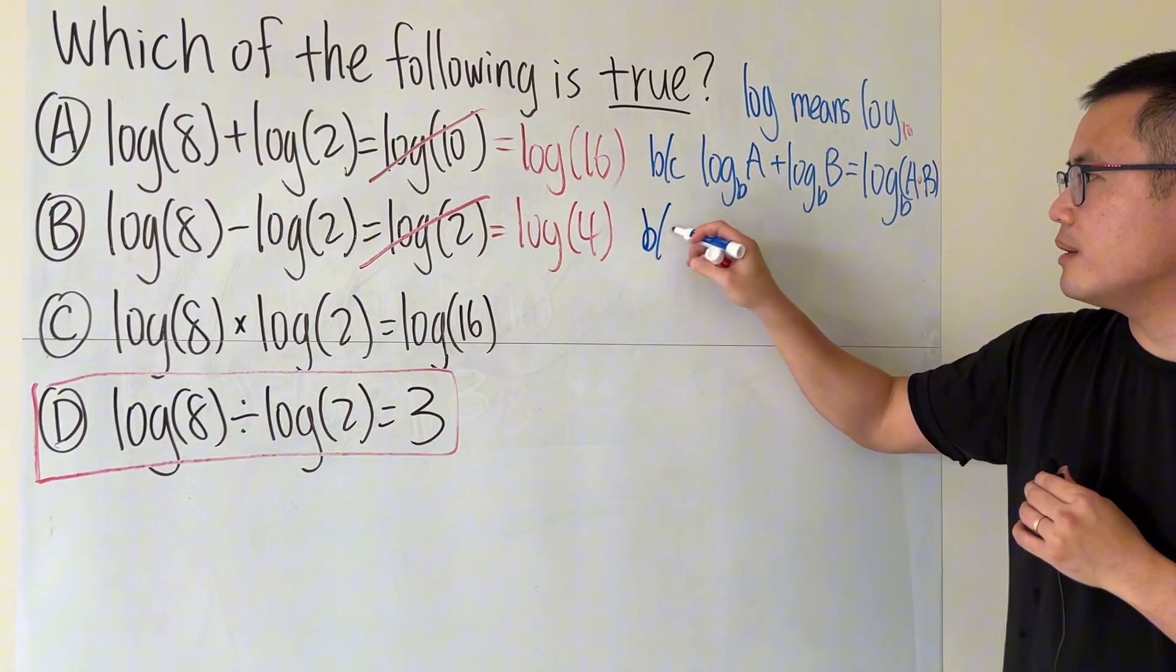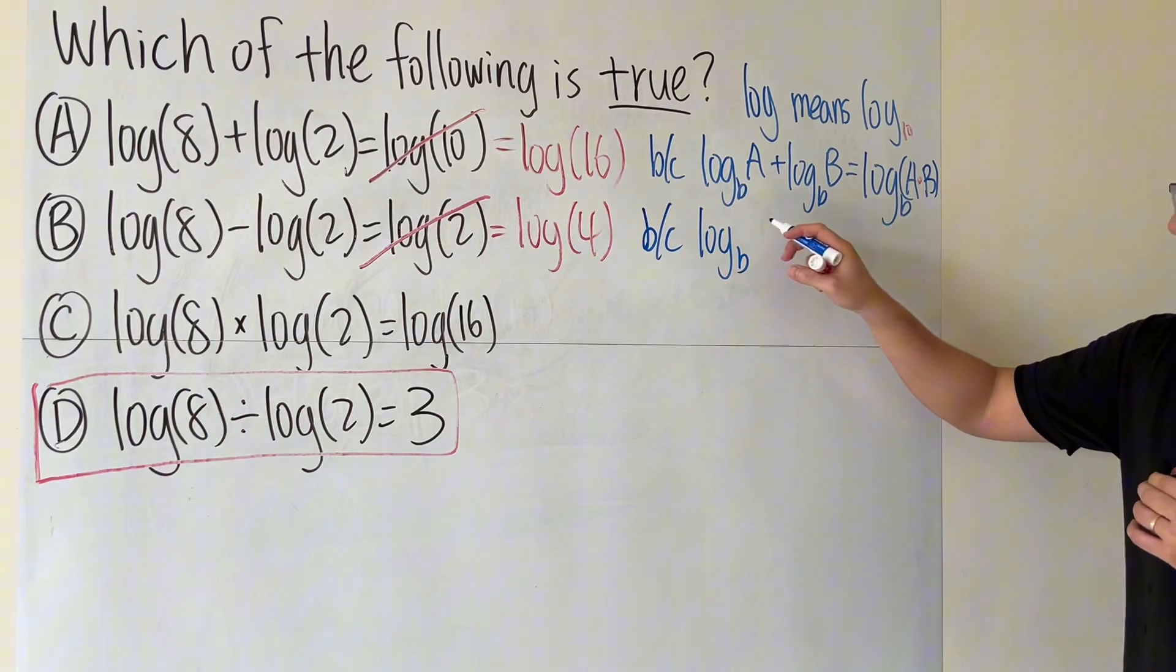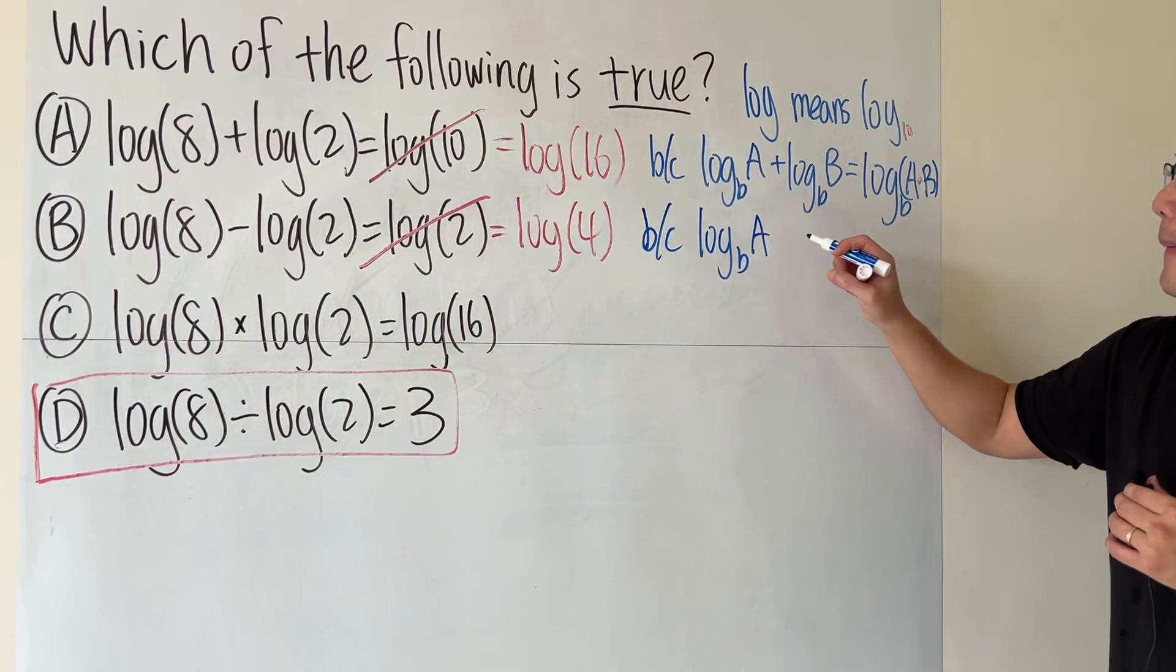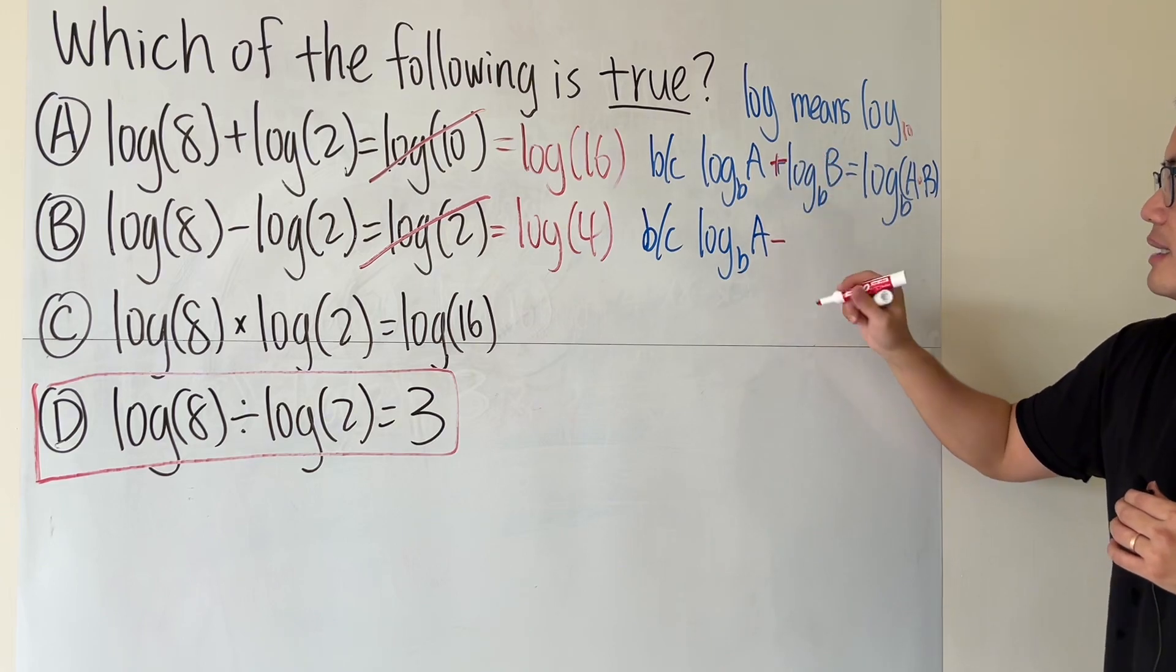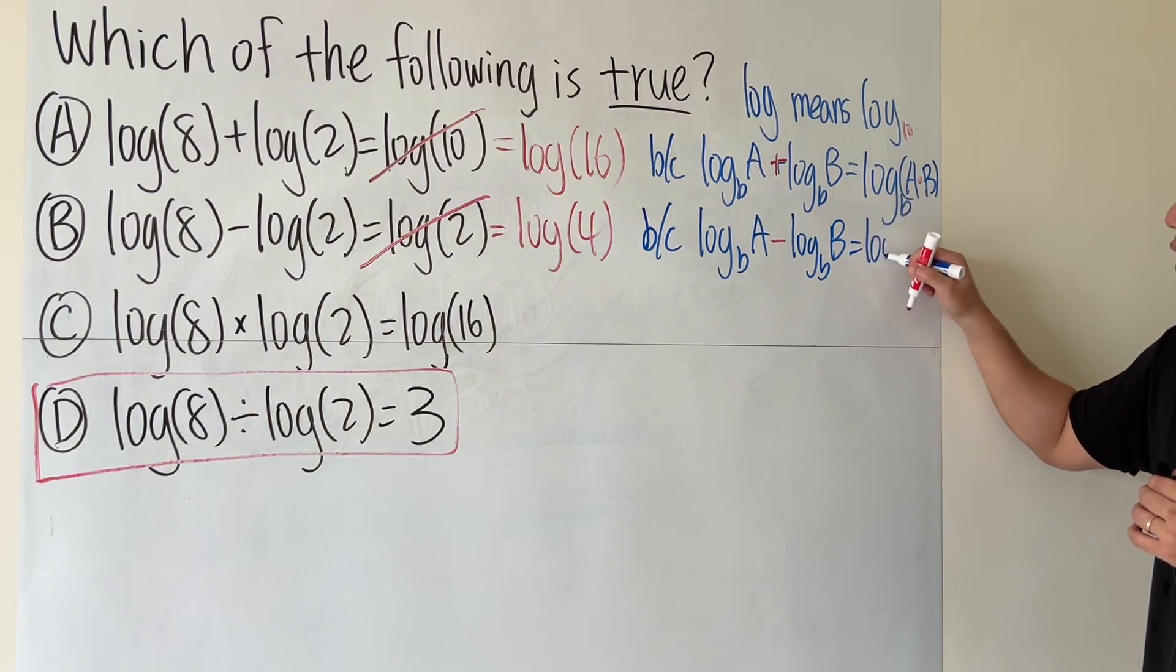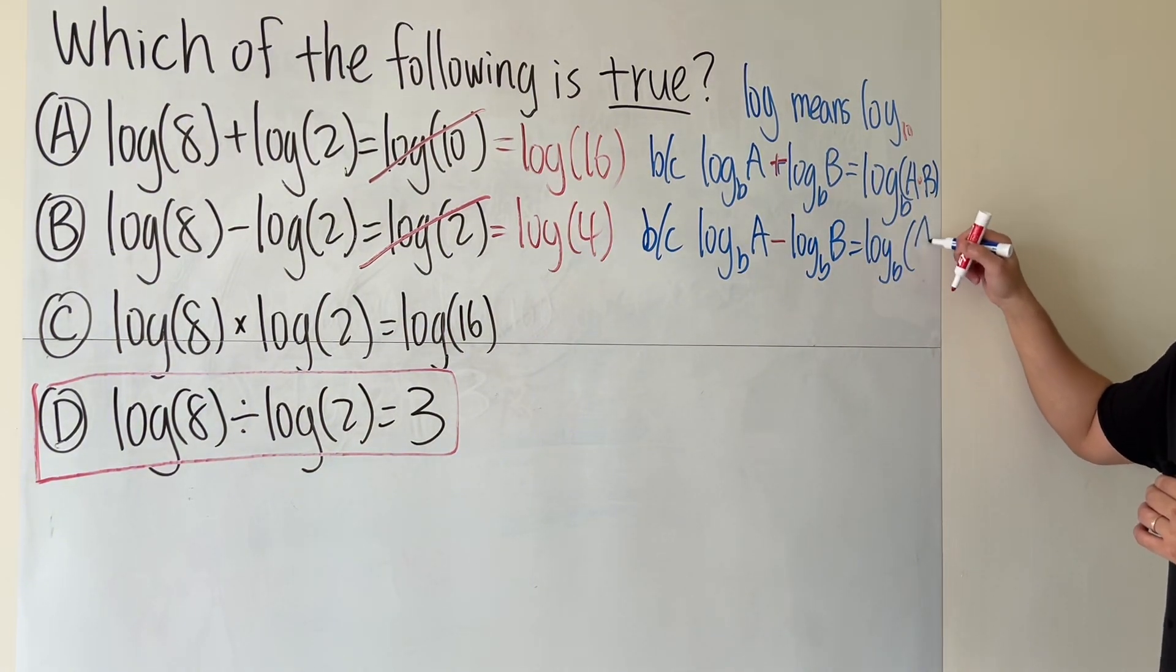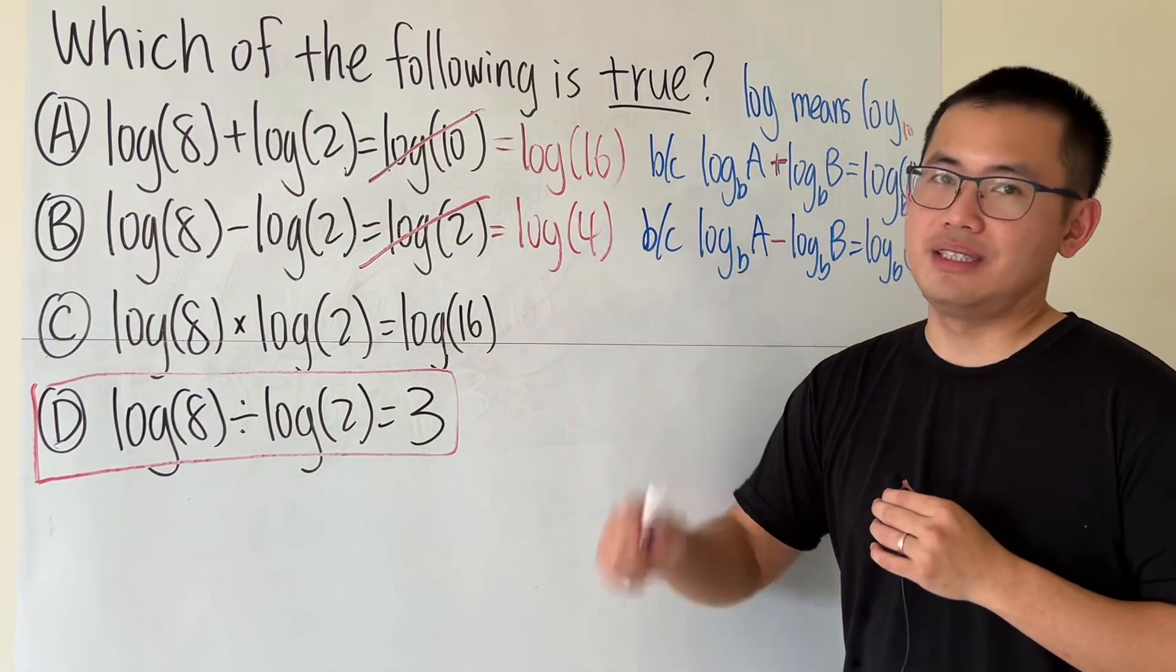Let me write that down. When we have log base b of a minus log base b of c, we get log base b of a divided by c. It's a division inside: a divided by 2 is equal to 4.